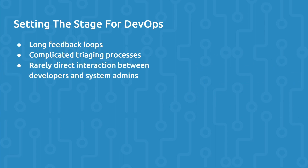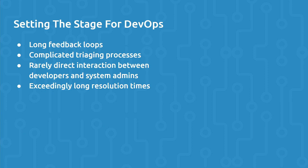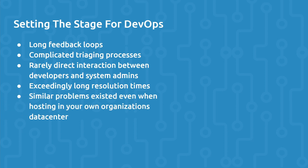There was rarely direct interaction between developers and system administrators. Communication was mostly proxied through project managers, supervisors, and similar points of contact. Multiple long email threads and lack of transparency into processes led to exceedingly long resolution times on bugs and operational issues. And what's worse is that many of these problems were not isolated to outsourcing your hosting solution — even when hosting your own data center, internal development and operations teams still had the same kind of issues.